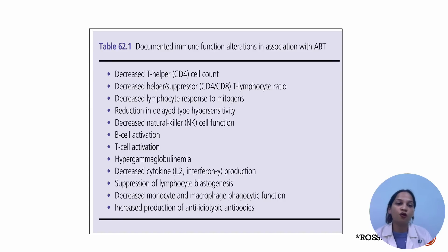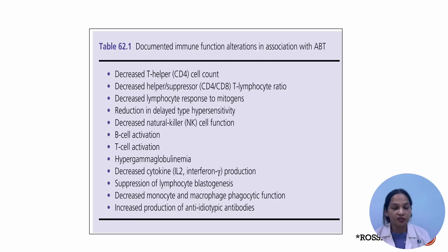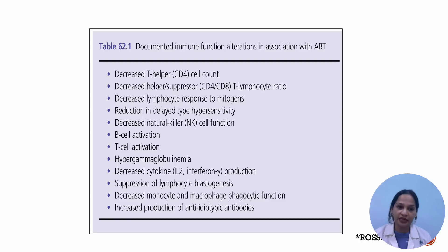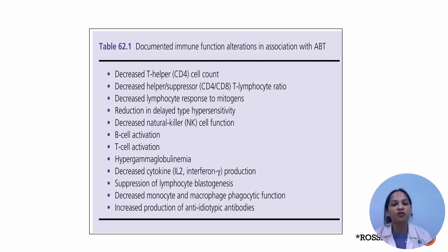These are the documented immune function alterations in association with allogeneic blood transfusion: decreased T helper cell count, decreased helper to suppressor T cell ratio, decreased lymphocyte response to mitogens, reduction in delayed type hypersensitivity, decreased natural killer cell function, B cell and T cell activation, hypergammaglobulinemia, decreased cytokine production, suppression of lymphocyte blastogenesis, decreased monocyte and macrophage phagocytic function, and increased production of anti-idiotypic antibodies.